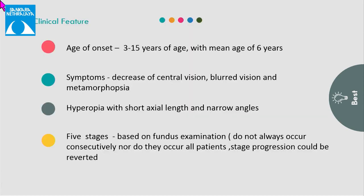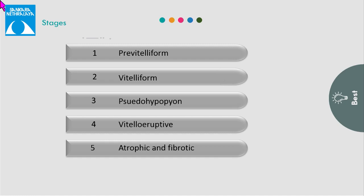Generally, the presentation is before puberty. The patient presents with decrease in central vision and they are hyperopes with narrow angles. Five progressive stages are based on fundus examination. These stages do not occur consecutively, nor do they occur in all patients.